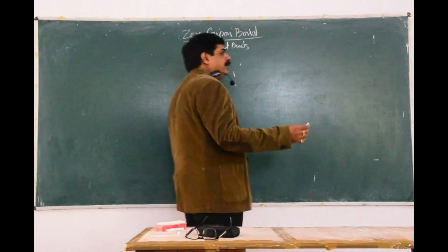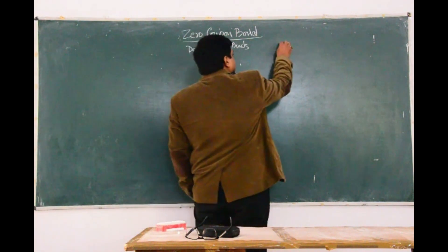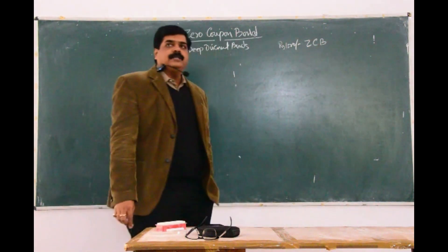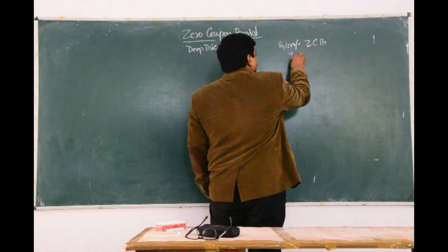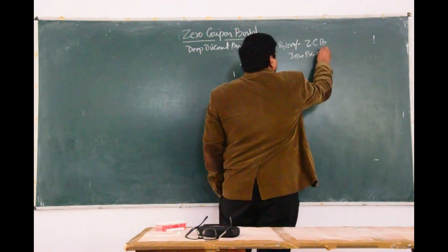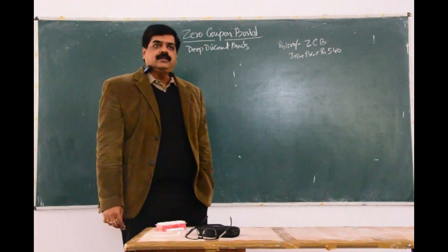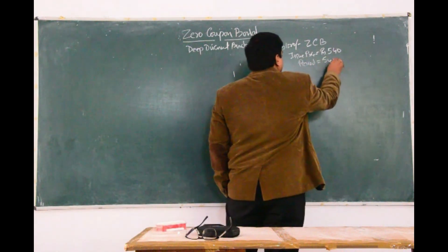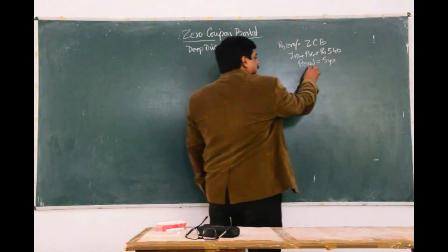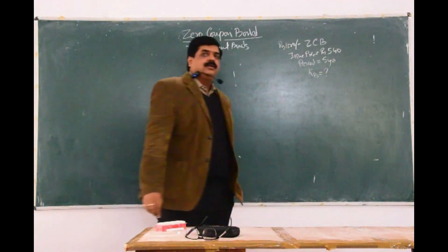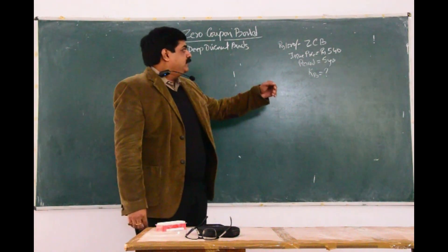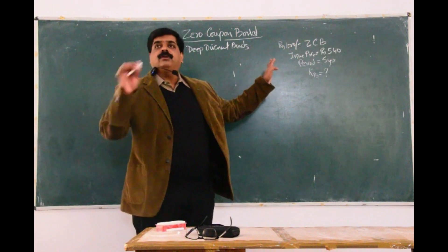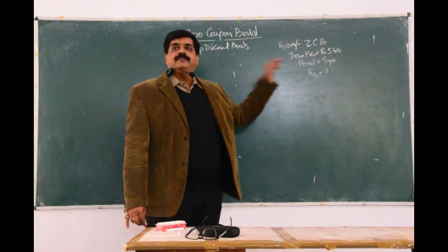Suppose a company makes an issue of a zero coupon bond. Rupees 1000 zero coupon bond is issued by the company, and the issue price is rupees 540. The duration and period for the issue is 5 years. We are supposed to calculate the cost of the debt. The face value is 1000, it has been issued at a deep discount of 540, and the duration is 5 years. We will apply the trial and error method.